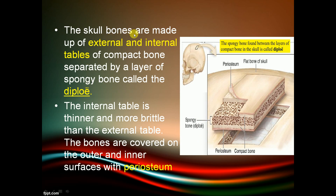The skull bones are made up of external and internal tables of compact bone, separated by a dense layer of spongy bone known as the diploë. The internal table is thinner and more brittle than the external table. The bones are covered on their inner and outer surfaces with periosteum.